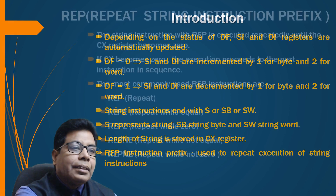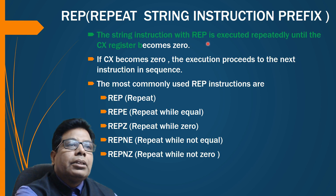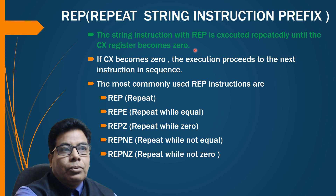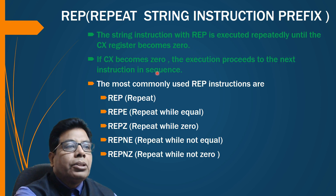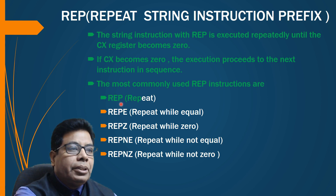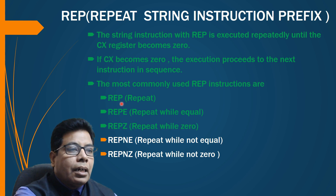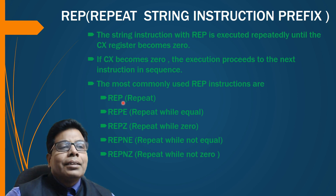The string instruction with REP is executed repeatedly until the CX register becomes zero. When CX becomes zero, execution proceeds to the next instruction in sequence. The most commonly used REP instructions are: REP (repeat), REPZ (repeat while zero), REPE (repeat while equal), REPNZ (repeat while not zero), and REPNE (repeat while not equal).